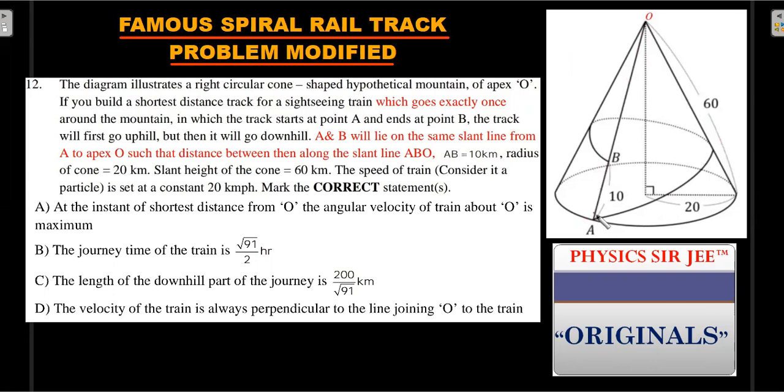The speed of the train, consider it as a particle with no dimensions, is set at a constant magnitude of 20 kmph. Mark the correct statements: (1) At the instant of shortest distance from O, angular velocity of the train about O is maximum. (2) The journey time is √91 by 20 hours. (3) The length of the downhill part is this much quantity. (4) The velocity of train is always perpendicular to the line joining O to the train.